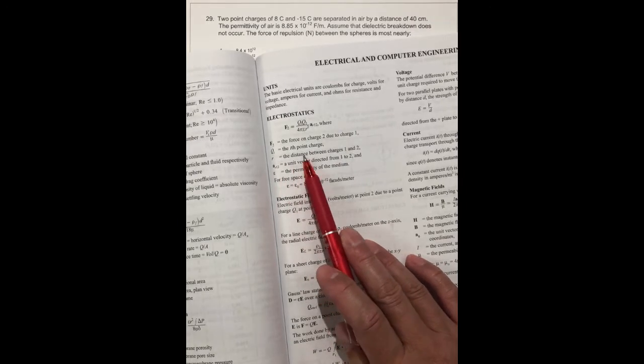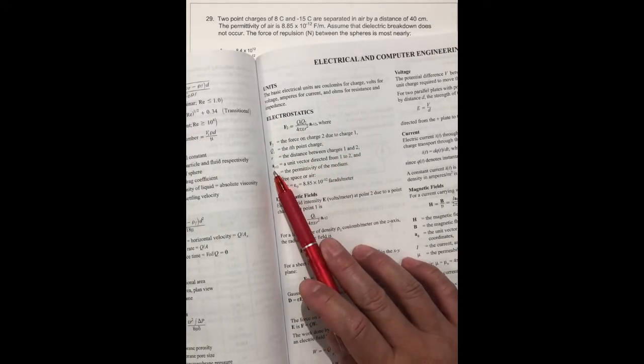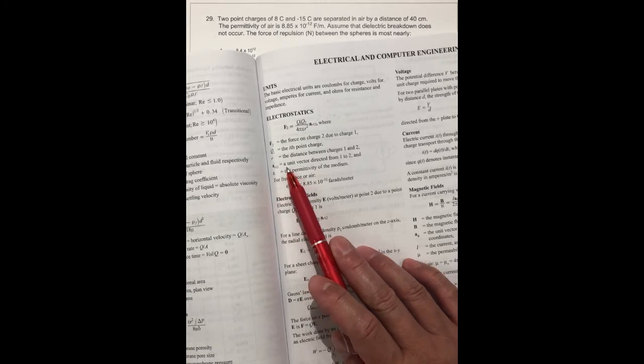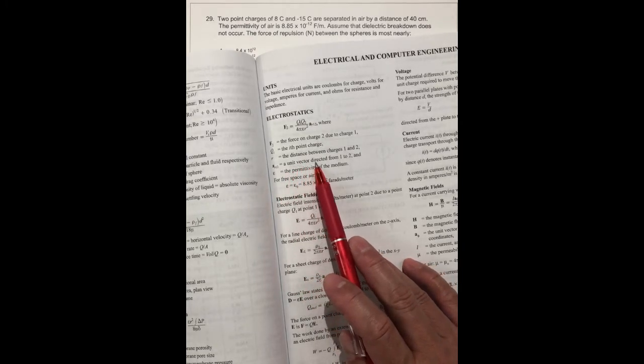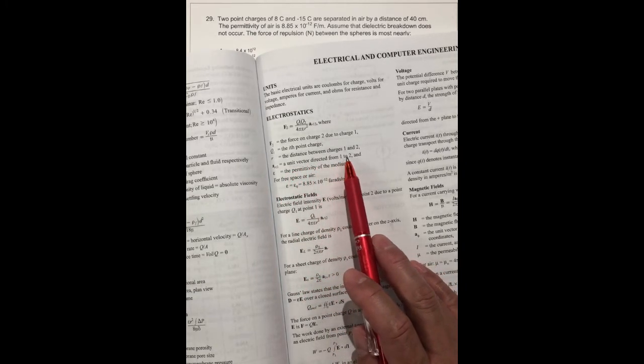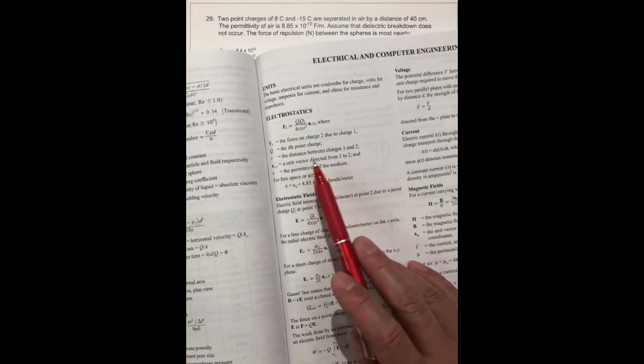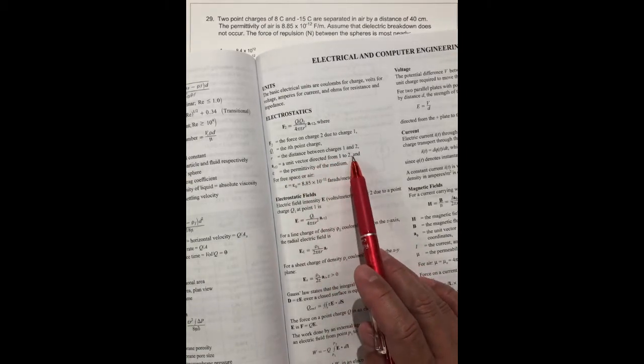R is the distance between charge 1 and charge 2. The AR is the unit vector directed from 1 to 2 because we have only two point charges.